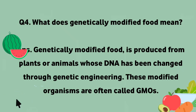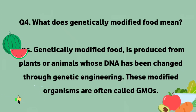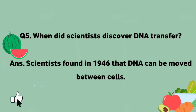Geniyatii toor per tabdeel shudha khuraak ka kiya matlab hai? Geniyatii toor per tabdeel shudha khuraak paudu ya janwaru se tiyaar ki jati hai jinke DNA ko geniyatii engineering ke zariye tabdeel kiya gaya hai. In tabdeel shudha jandarun ko aksar GMOs kaha jata hai.